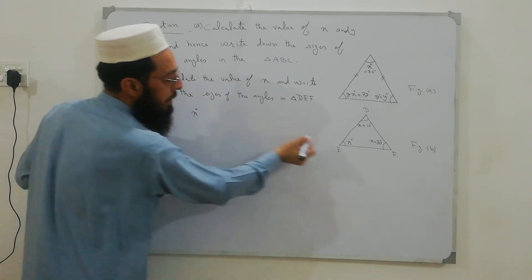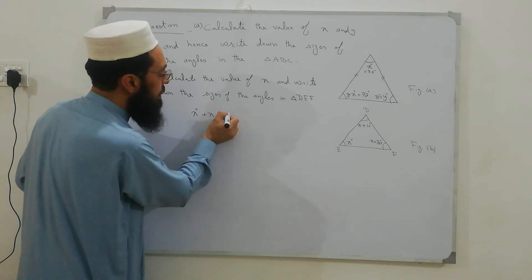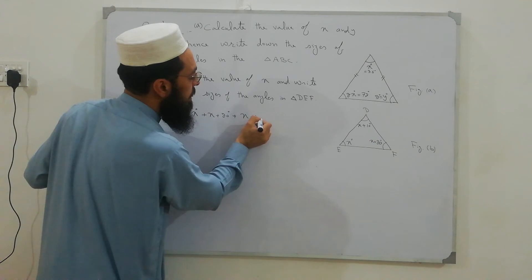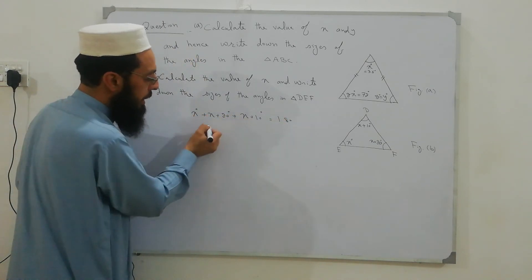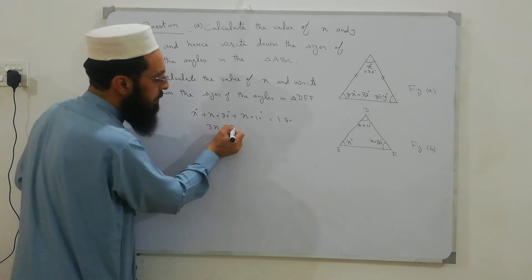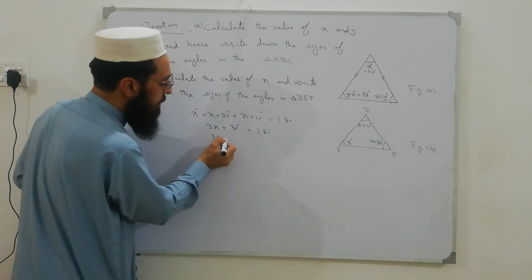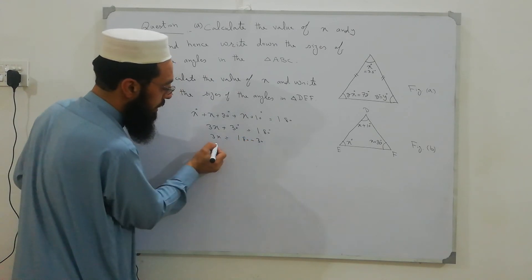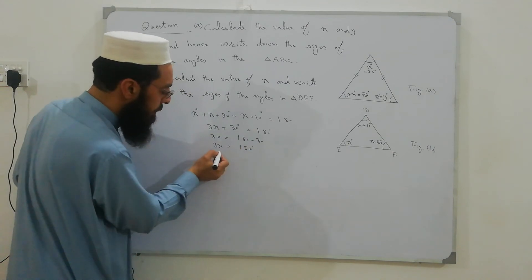So x plus (x + 20) plus (x + 10) equals 180 degrees. Combining like terms: x plus x plus x equals 3x, and 20 plus 10 equals 30, so 3x plus 30 equals 180 degrees. Therefore 3x equals 180 minus 30, which gives 3x equals 150 degrees. Dividing both sides by 3.